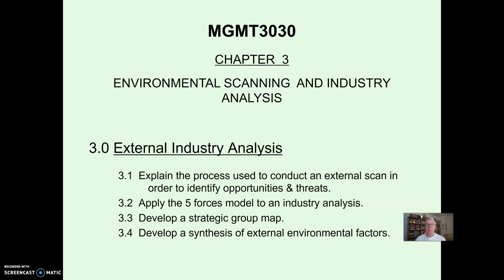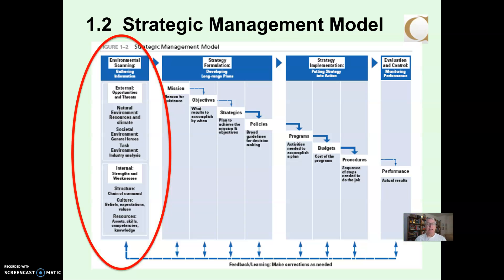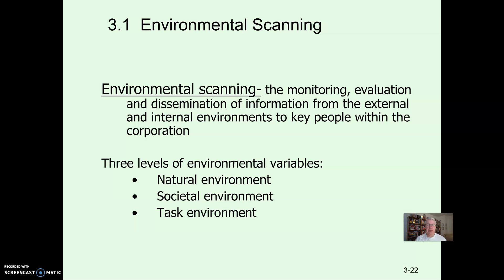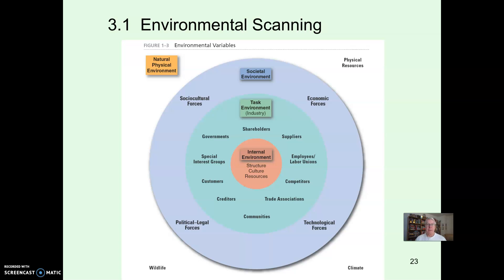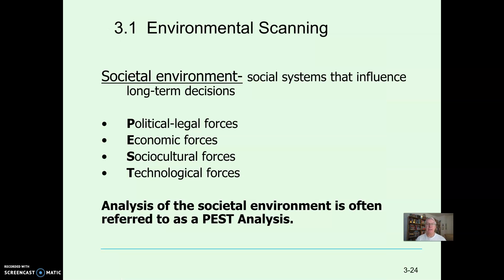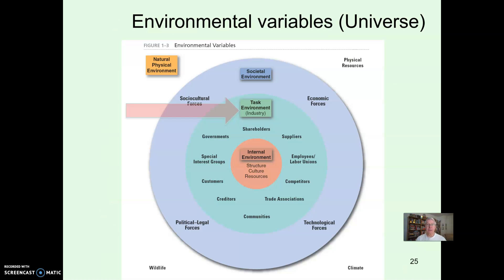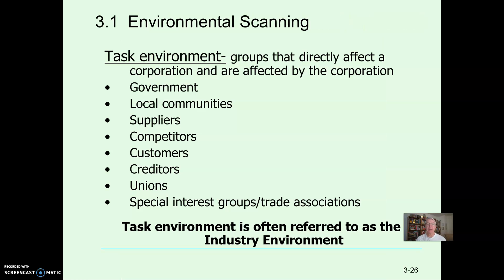In the third chapter, we looked at external industry analysis, moving back to environmental scanning — monitoring, evaluating, and disseminating information from external and internal environments. Looking at the external environment, there's the natural physical environment on the outside, the societal environment with PEST elements — political, economic, social, and technological forces — and then the task environment closer to the organization, which includes government, local community, suppliers, competitors, and customers. We analyze that to look for changes and trends.